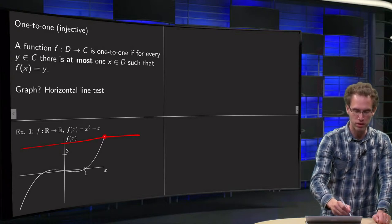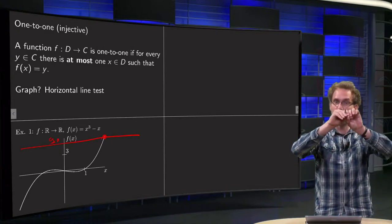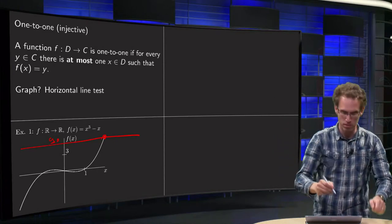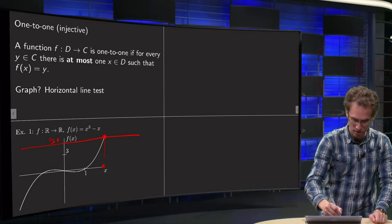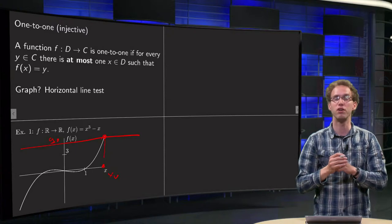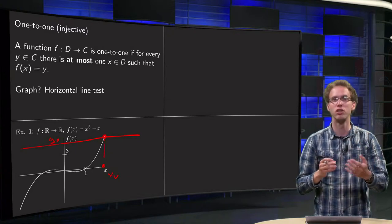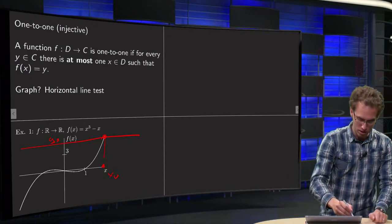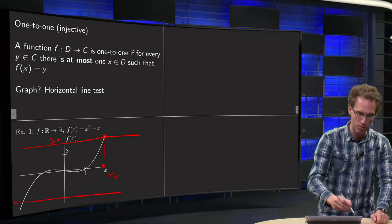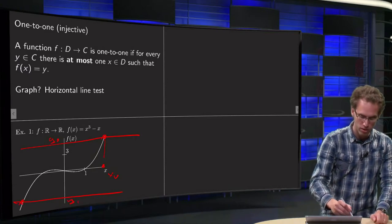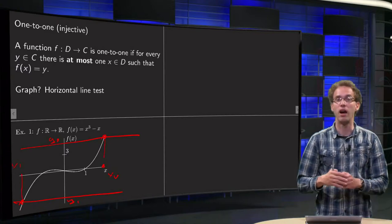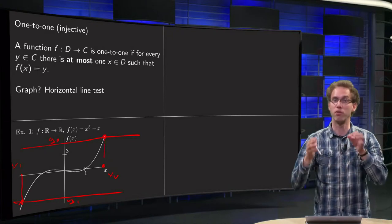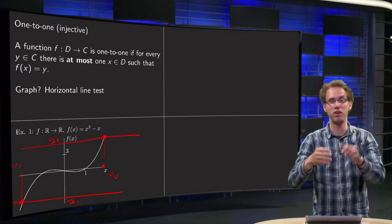We see it intersects once. So for this particular value y₀, we have one intersection with the graph of f, which means that there is one point, x₀, which is mapped to that particular value of y₀. Now we are going to search for heights where we intersect the graph more times. We go a bit lower and we see that it only intersects the graph once at y₁, so at x₁. So again, only one intersection — to that particular y₁ and y₀, there is only one x mapped to that value.